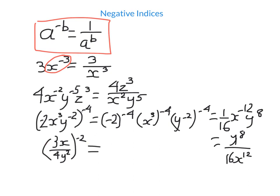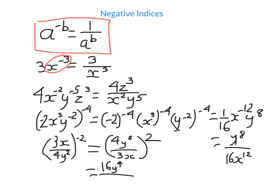When you have a fraction to a negative power, the easy trick is to flip the fraction and change the power to positive. Then apply index law 6: raise the top and bottom to that power. For example, flipping and squaring: the numerator becomes 16y⁴ and the denominator becomes 9x². You can't simplify further even though 4 and 2 share a common factor — they're powers, not coefficients, so you cannot cancel them.